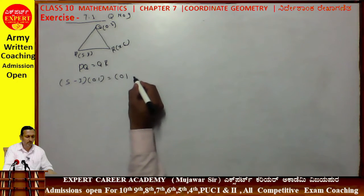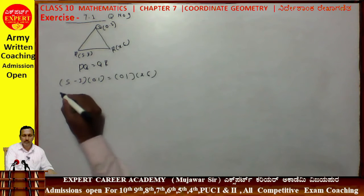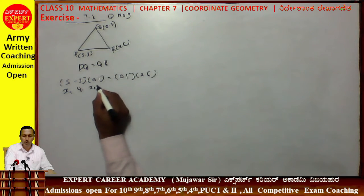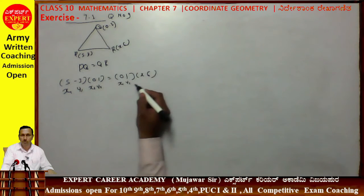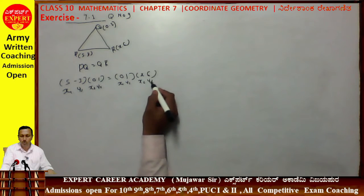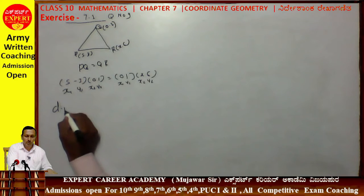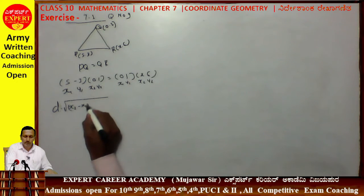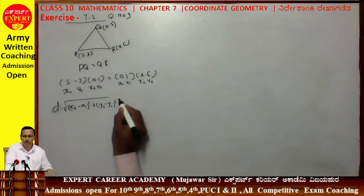Coordinates: Q is (0,1), R is (x,6). Assigning: x1, y1, x2, y2 for the distance formula. Distance formula: d = √[(x2 - x1)² + (y2 - y1)²].